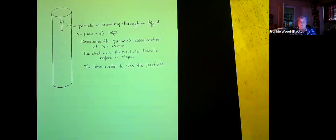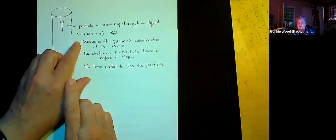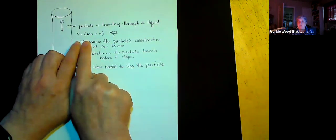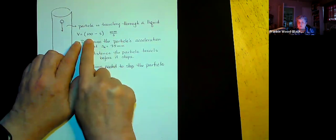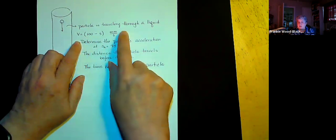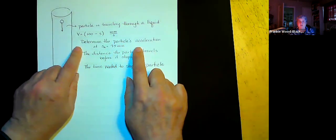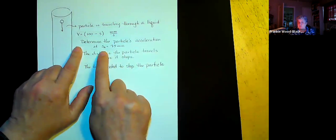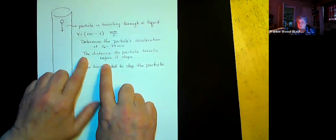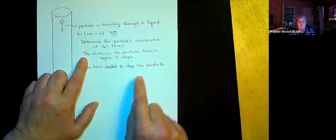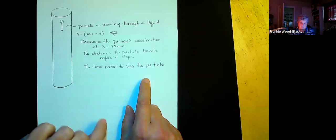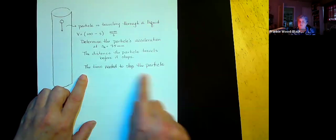We're going to allow the particle to drop through the tube. Based on our measurements, we've been able to see that the velocity of this particular particle can be written as: velocity equals 100 minus s (our position), in millimeters per second. We want to determine the particle's acceleration when it reaches a position of 75 millimeters, the distance the particle travels before it stops, and the time needed to stop the particle.